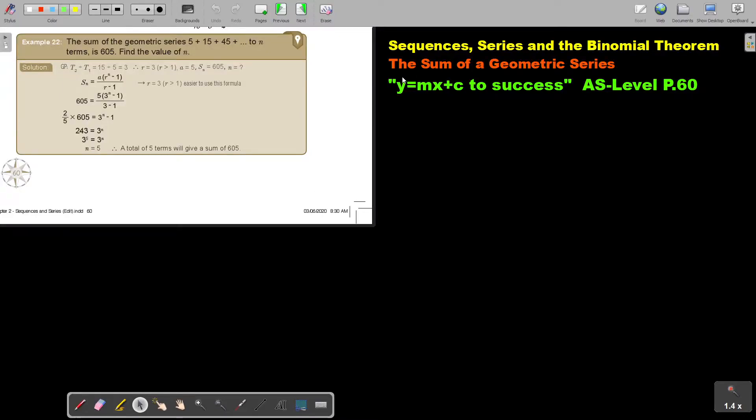In this video, we will continue with the sum of a geometric series. You will find this on page 60 in the Namibia AS level mathematics textbook, Y equals MX plus C to success.